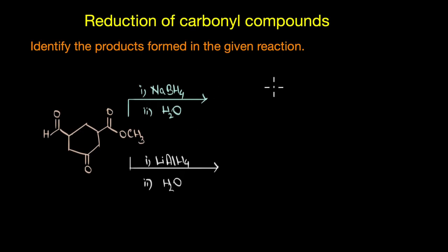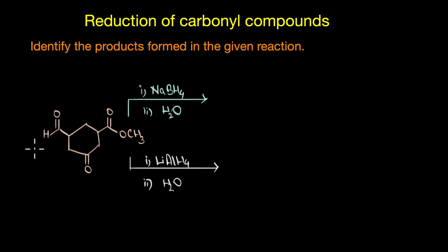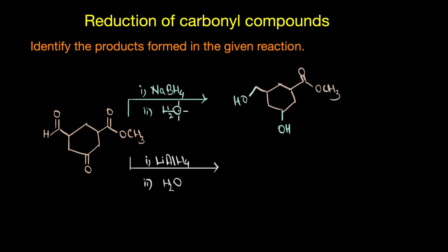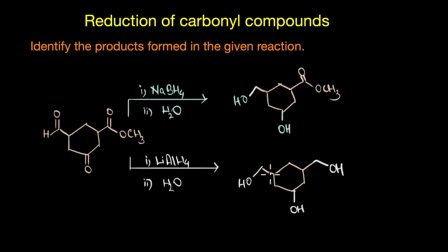Before wrapping up, we need to identify the products formed when the given compound is subjected to reduction with each reagent. Sodium borohydride reacts selectively with aldehydes and ketones but not with the less reactive ester group — it reduces aldehydes to primary alcohols and ketones to secondary alcohols. Lithium aluminium hydride, being highly reactive, reduces all groups: aldehydes to primary alcohols, ketones to secondary alcohols, and esters to primary alcohols.